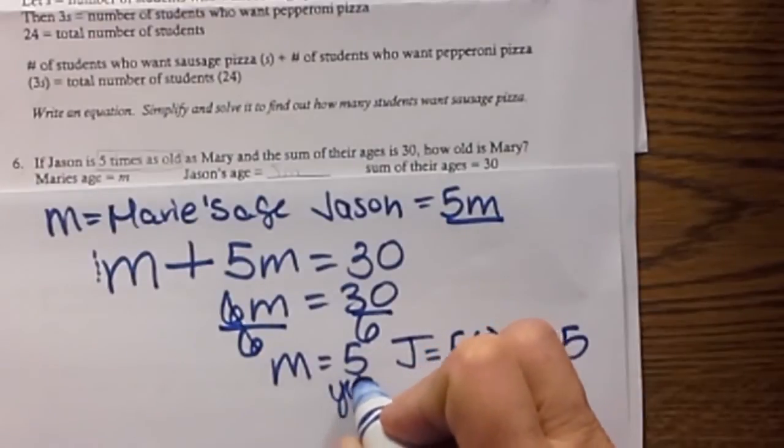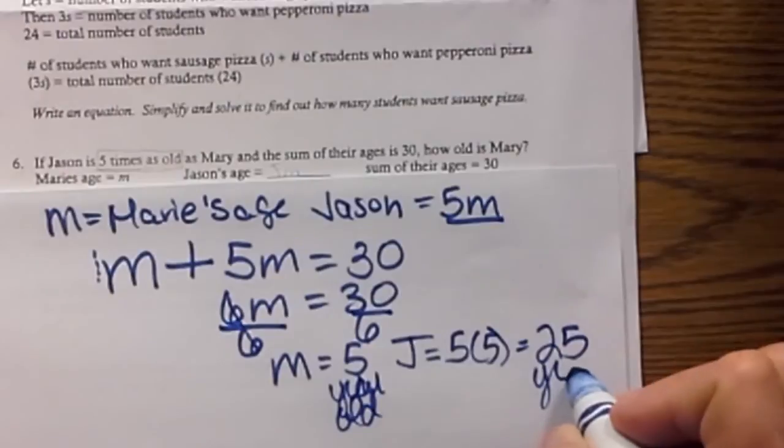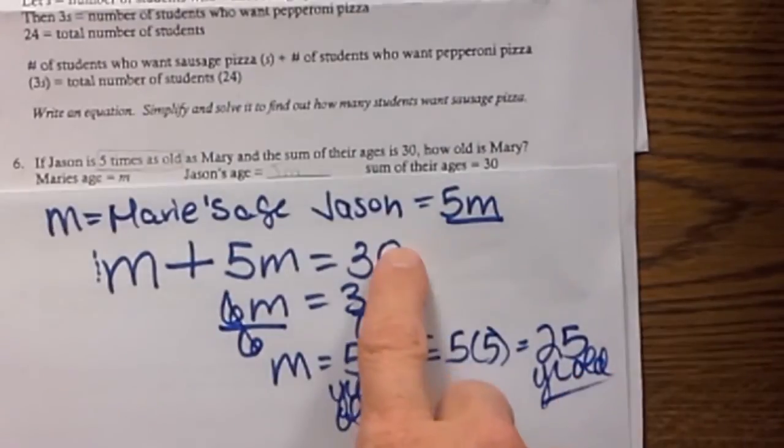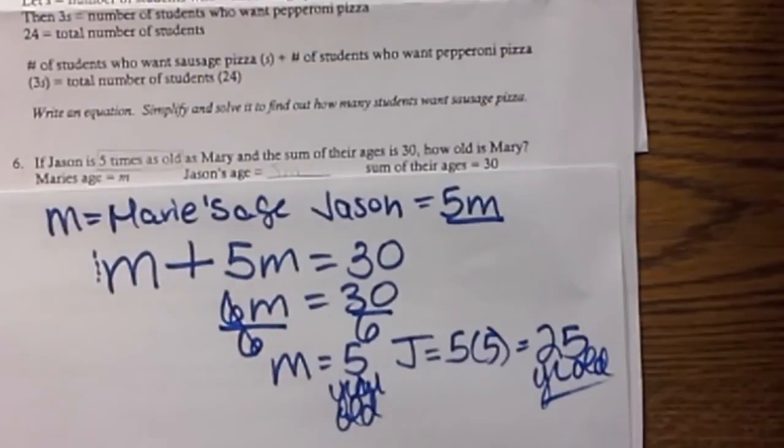So 5 years old. That's Mary's age. And 25 years old. That's Jason's age. And the sum, let's check it. The sum is equal to 30. Yes, 5 plus 25 is 30. So that's how you would check that one.